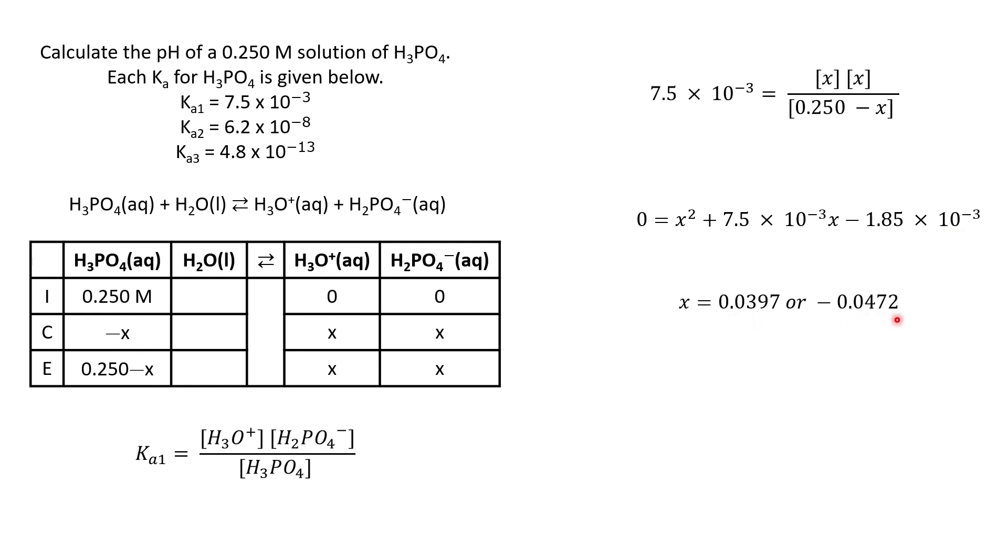Again, I need to drop one of these roots. The one I drop is the negative one because I cannot have a negative concentration. So this is my value for X, which of course is my concentration of hydronium. So let's plug in for our pH. Our pH is just negative log of our hydronium concentration, which is our value of X. So here's our negative log of 0.0397. And I get a pH of 1.40. This makes sense. I have an acid in solution. It should be less than 7. But that, again, is just the first of three steps. We need to now take a look at what's going on with our second step or our Ka2.